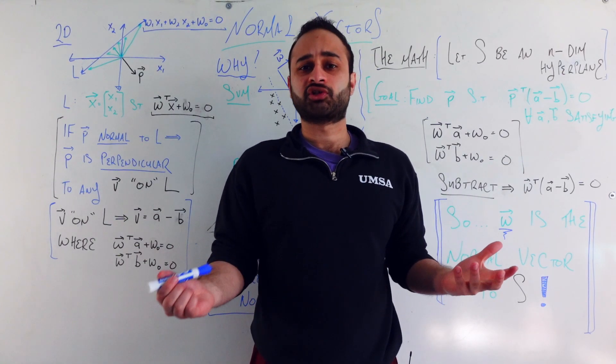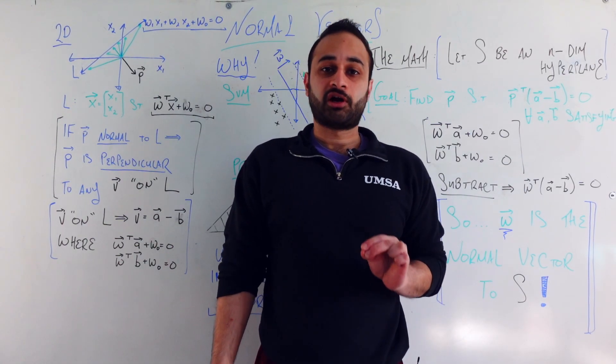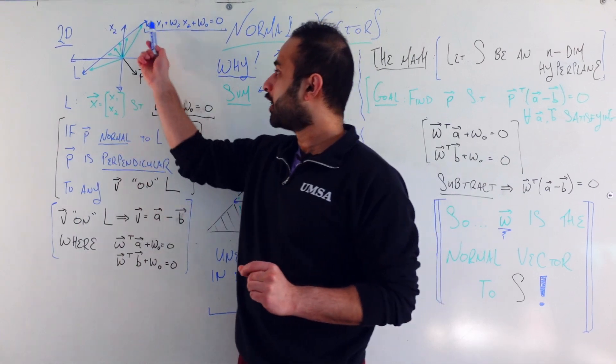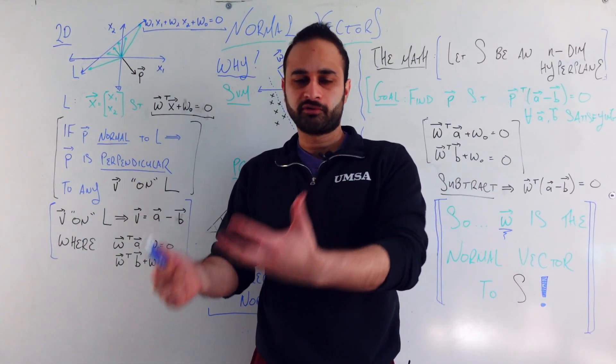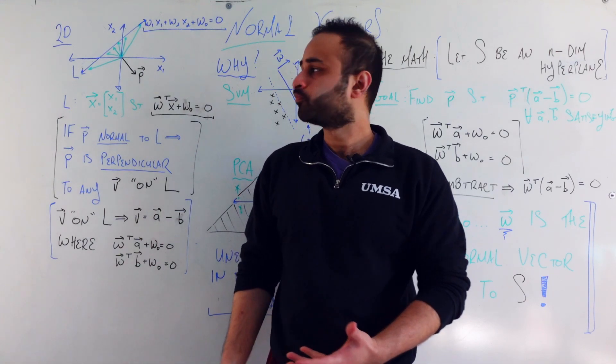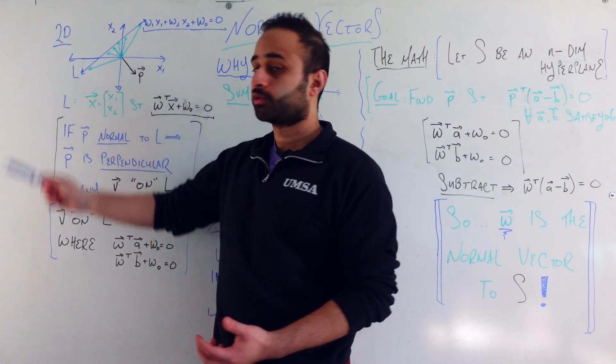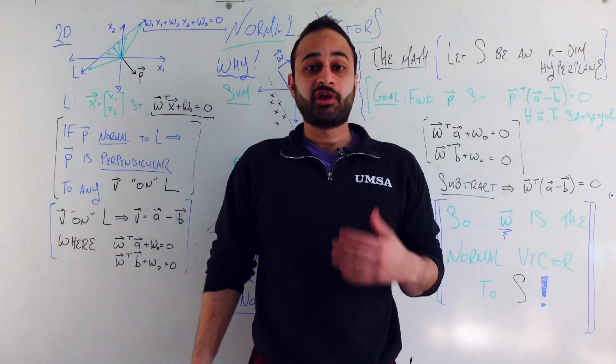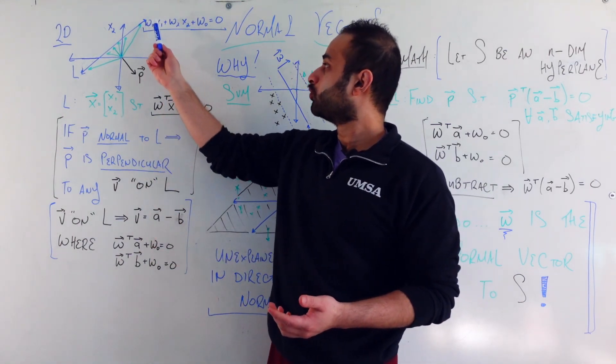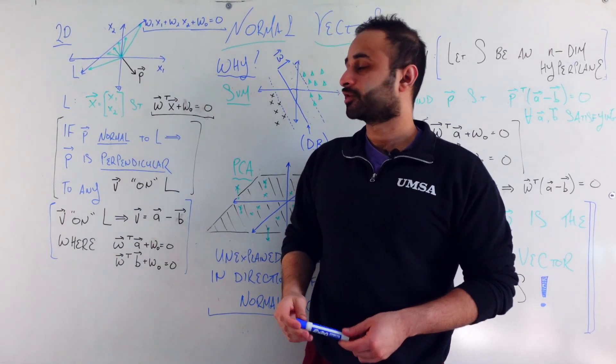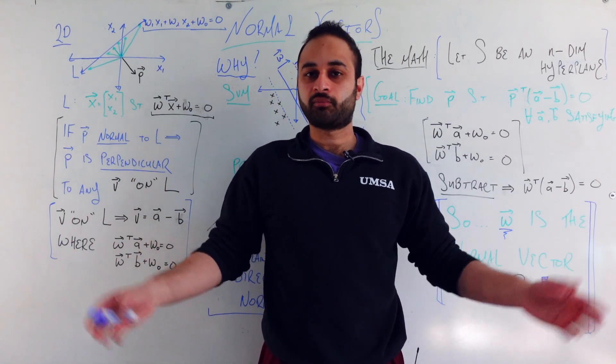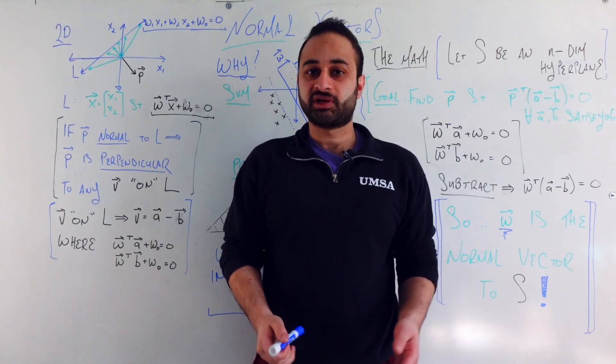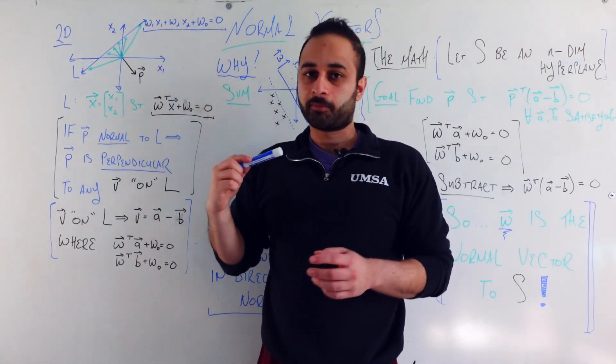So starting from what a normal vector actually is, the easiest place to start here, the best place to start I think is a line in two dimensions just because that's pretty apparent to all of us. We've all learned this since our beginning algebra courses. So we have this blue diagonal line which we're going to call L and we know that the equation of that line is w1x1 plus w2x2 plus w0 is equal to 0. So you can rearrange this in whatever form you want, point slope form, slope intercept form, whatever, but in the end they have this general form.